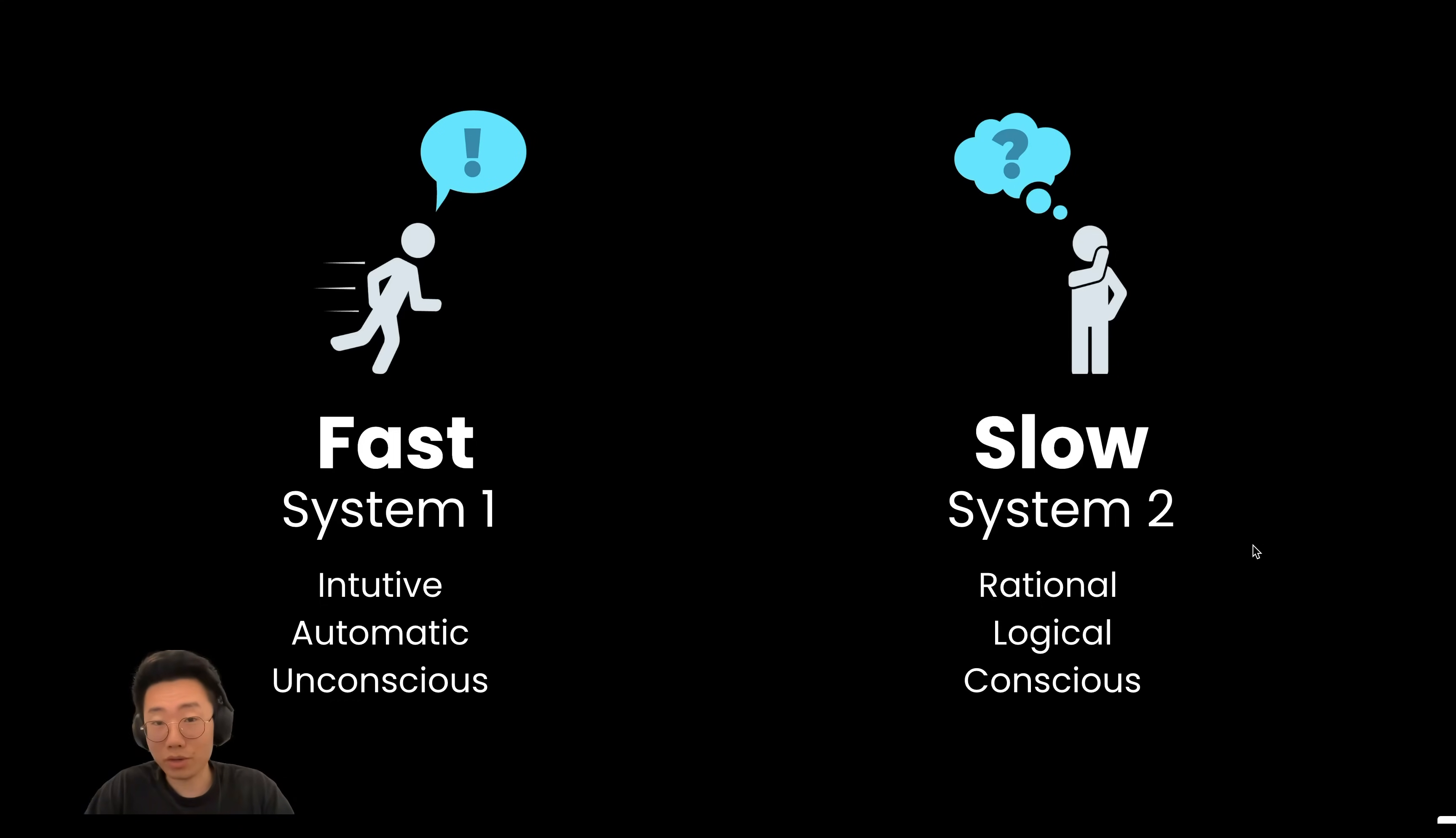But if I give you a more complicated question, like what's 129 multiplied by 3.56, you don't have the answer ready. You actually need to take time, do some calculations, think that through, and give me the answer. And this is system two.